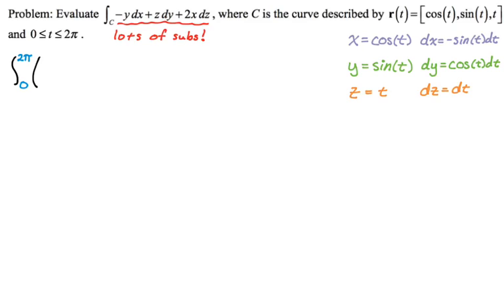So that negative y dx, so the negative sign just kind of stays. And then y is sine of t. And then dx is negative sine of t dt. So the issue here is that if you look at it, dx, dy, and dz all have a dt. So what I'm going to do is I'm going to save that for the very end and just write it once. But I could put a dt here and make three separate integrals, I'm going to do it all in one shot. So plus, z is just t, dy is cosine of t dt. And then plus two x is cosine. So plus two cosine of t. And then dz is just dt. So I'm going to close this and put a dt.